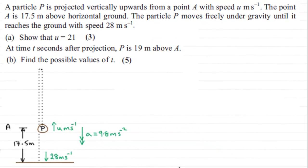Now for this next part B, we're told that at time T seconds after projection, P is 19 meters above the point A, and we've got to find the possible values of T.